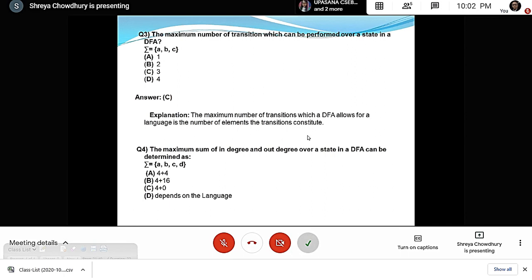Question 4: The maximum sum of in-degree and out-degree over a state in a DFA can be determined—the answer is D: depends on the language. This is because the out-degree is fixed, but the in-degree depends on many factors.